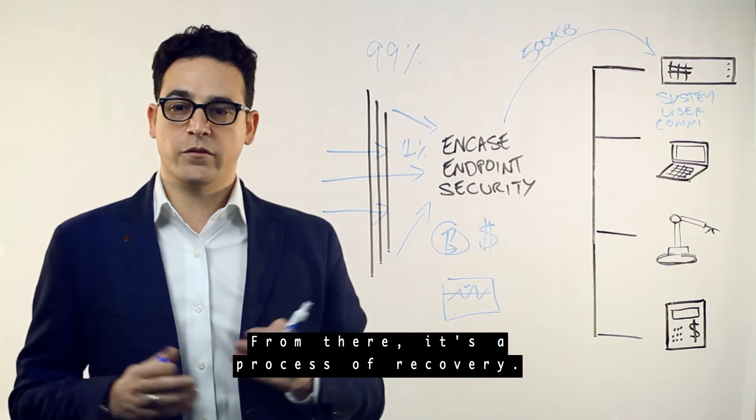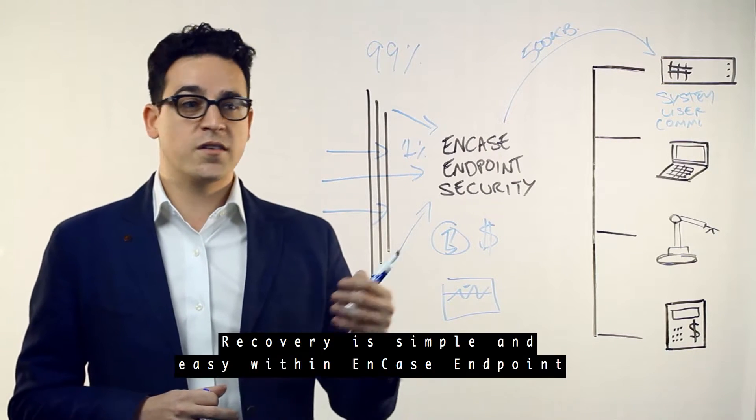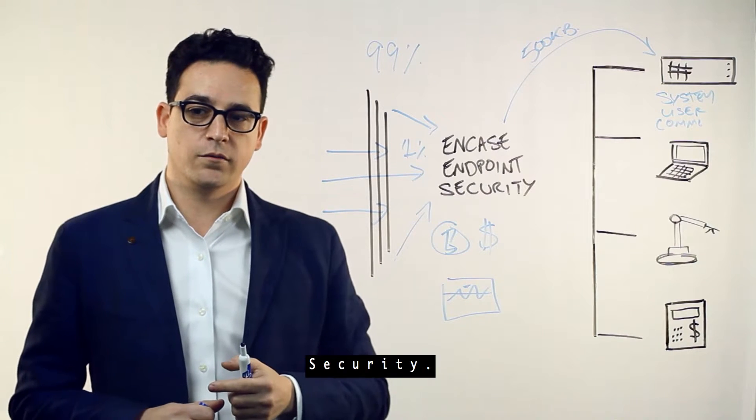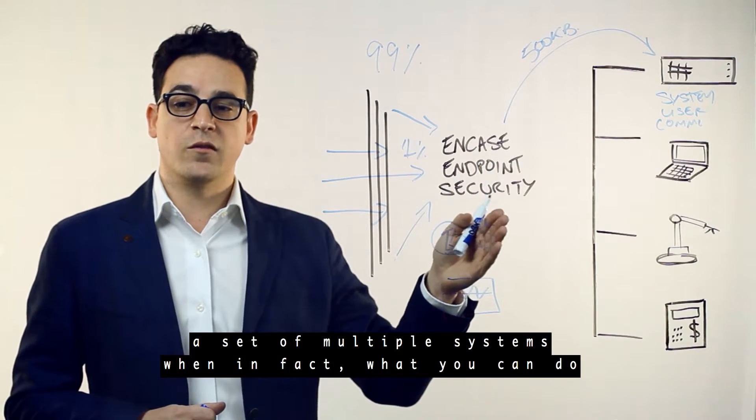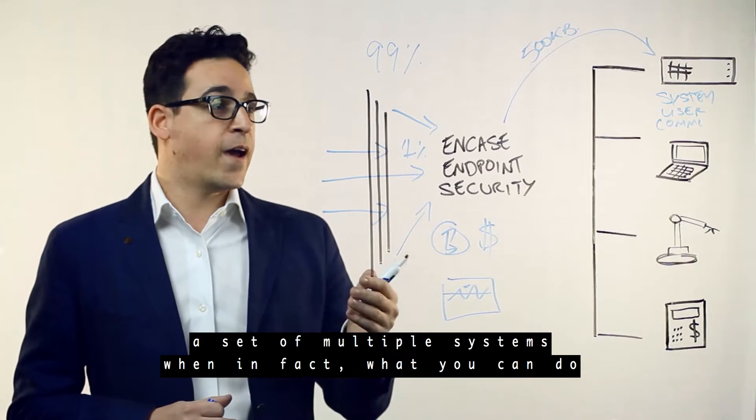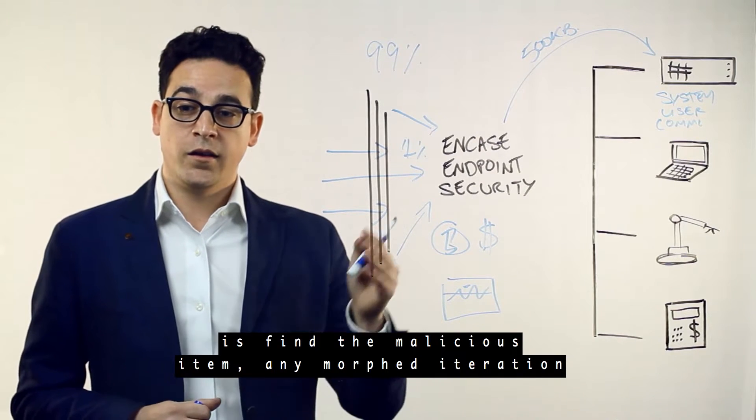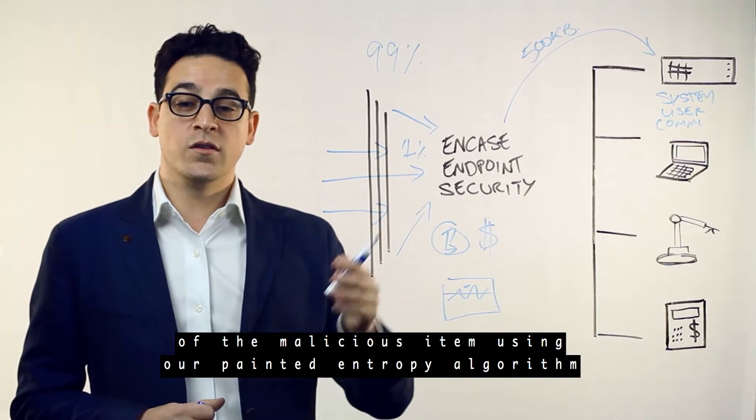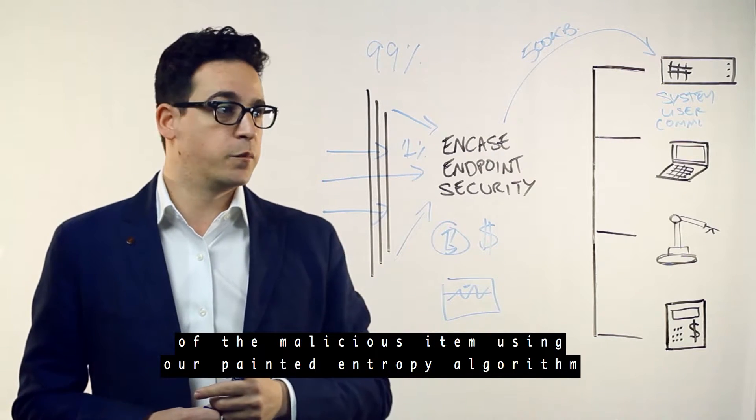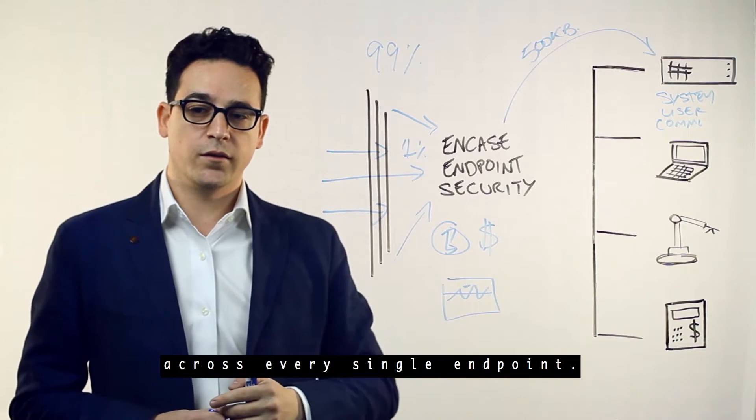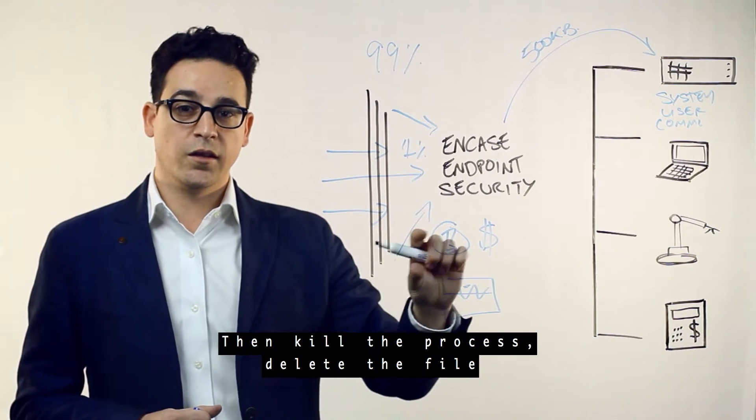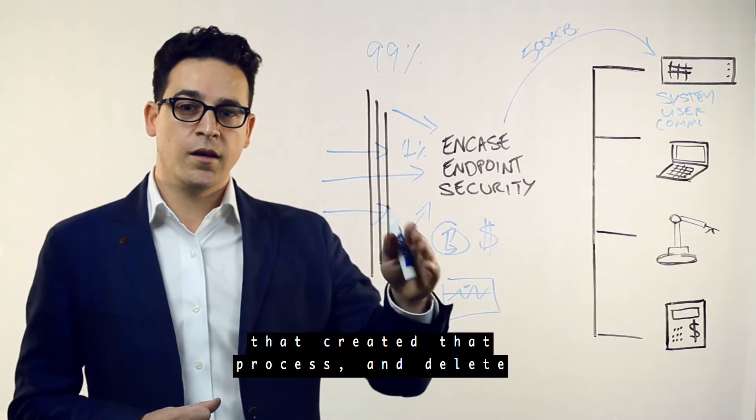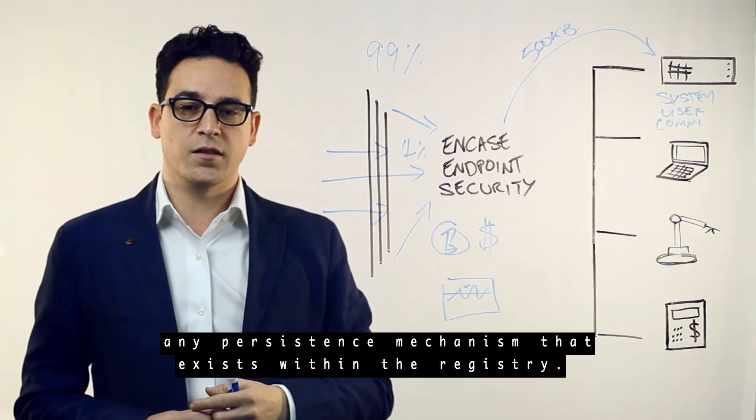From there, it's a process of recovery. Recovery is simple and easy with NCASE endpoint security. Why would you bother wiping and re-imaging a set of multiple systems when what you can do is find the malicious item, any morphed iteration of the malicious item using our patented entropy algorithm across every single endpoint, then kill the process, delete the file that created that process, and delete any persistence mechanism that exists within the registry.